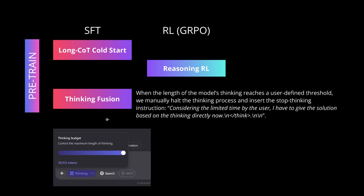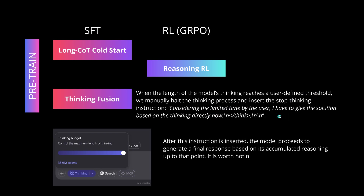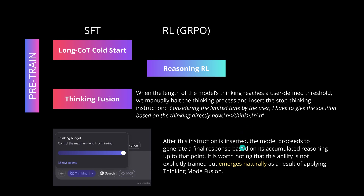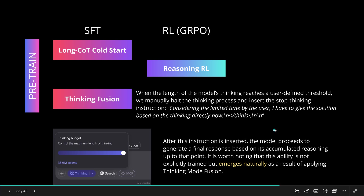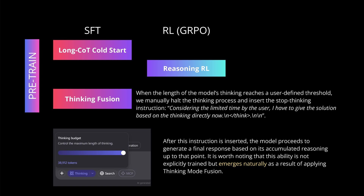An interesting detail: QwQ3 supports a thinking budget - you can control the maximum length of the thinking process up to 38,912 tokens via a simple 'stop thinking' instruction. Fascinatingly, the authors note this budget-control ability emerges naturally as a result of applying the thinking mode fusion. The model, having identical schemas for thinking and non-thinking mode, figures out itself how to stay within the user-defined boundary condition.